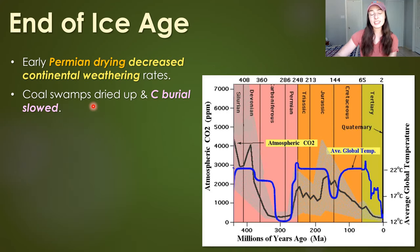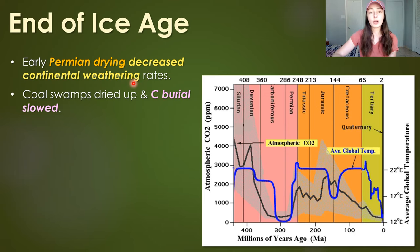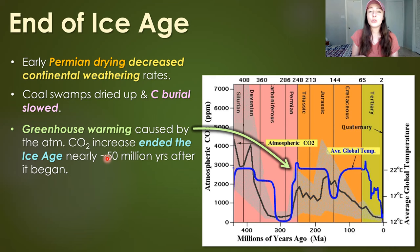What ended the ice age? Early in the Permian there was an increase in aridity — drying — which decreased continental weathering rates, because rain needs to occur more often to drive weathering. With less rain due to less evaporation, there was less continental weathering, so carbon dioxide could build up in the atmosphere more. Coal swamps dried up and therefore carbon burial rates slowed, also increasing atmospheric CO₂. This initial CO₂ increase would have started global warming to the point that ice began melting.